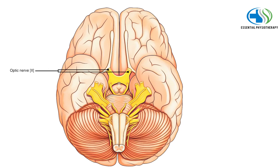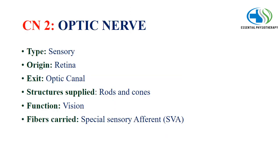The second cranial nerve is the optic nerve. It is a sensory type nerve which has its origin from the retina and it exits through the optic canal. The structures supplied are rods and cones, which are the photoreceptors, and the function is vision. The fibers carried by the optic nerve are special sensory afferent fibers.